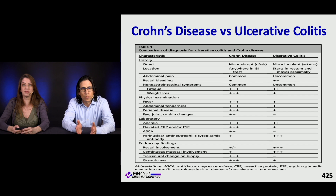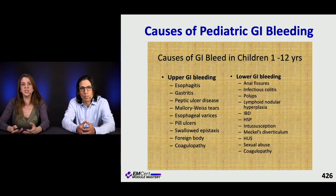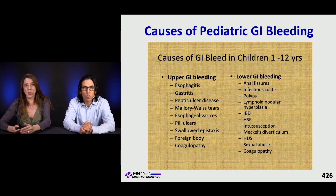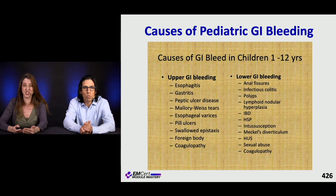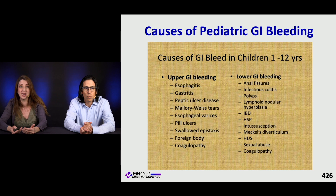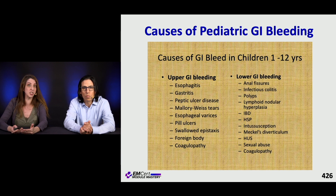There's a nice reference chart delineating the difference between Crohn's disease and ulcerative colitis. There's also a great reference slide for pediatric causes of GI bleeding, broken down by upper and lower GI bleeding. For upper GI bleeding, button batteries are particularly concerning — a plain film can tell you if something is in there. Swallowed epistaxis can also give hematemesis. For lower GI bleeding in children, anal fissures are common in constipated kids. Intussusception and HSP are also concerns, and don't forget about sexual abuse.